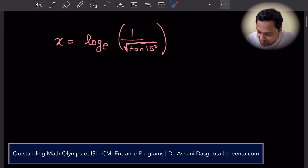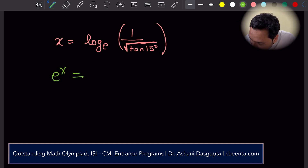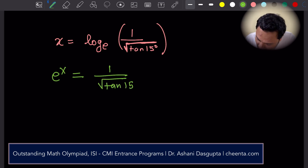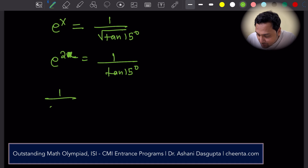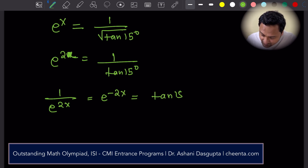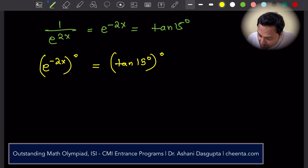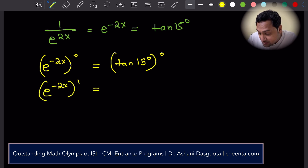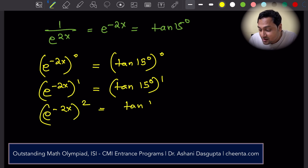Let's look at this expression first and convert it into exponential form. What you have is e to the power x equals 1 by square root of tan 15 degrees. Let's square both sides: e to the power 2x is 1 by tan 15 degrees. And if we do the reciprocation, we have e to the power minus 2x equal to tan 15 degrees. So e to the power minus 2x raised to the power 0 is tan 15 degrees to the power 0, raised to the power 1 is tan 15 degrees to the power 1, whole square is tan 15 degrees whole square, and so on.